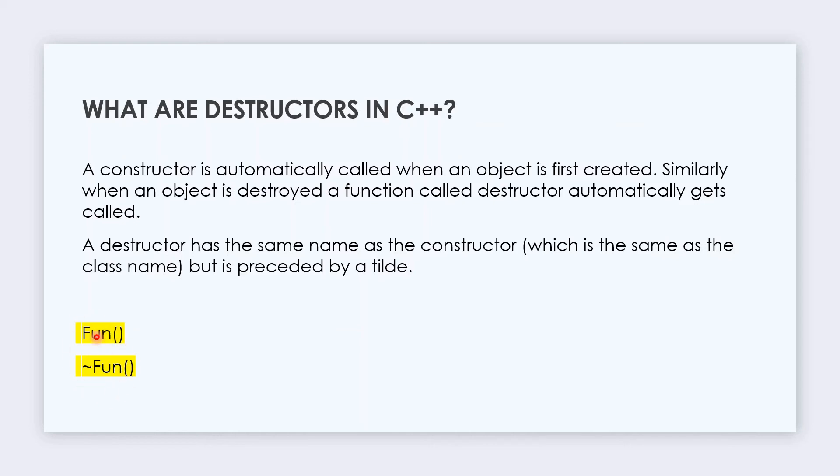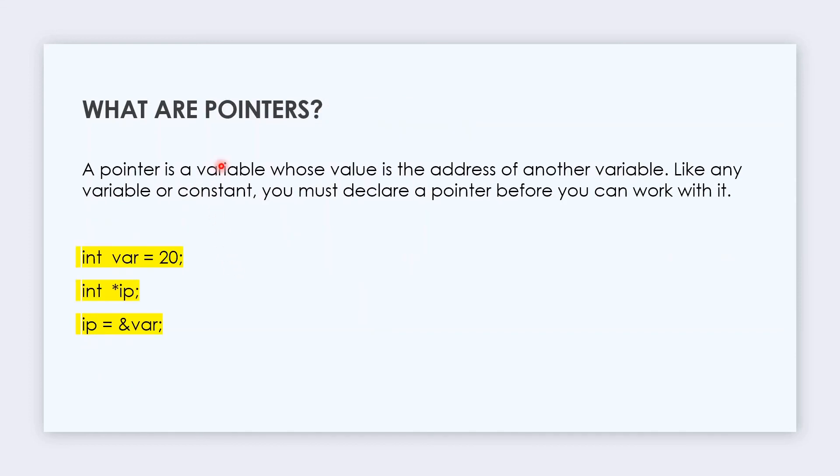What are pointers? A pointer is a variable whose value is the address of another variable. Like any variable or constant, you must declare a pointer before you can work with it. For example, int var equals 20, where var variable has value 20. Int star ip creates a pointer, and in pointer ip we store the address of that variable. When we print ip we get the value 20, and when we print star ip, this prints the address of that variable.